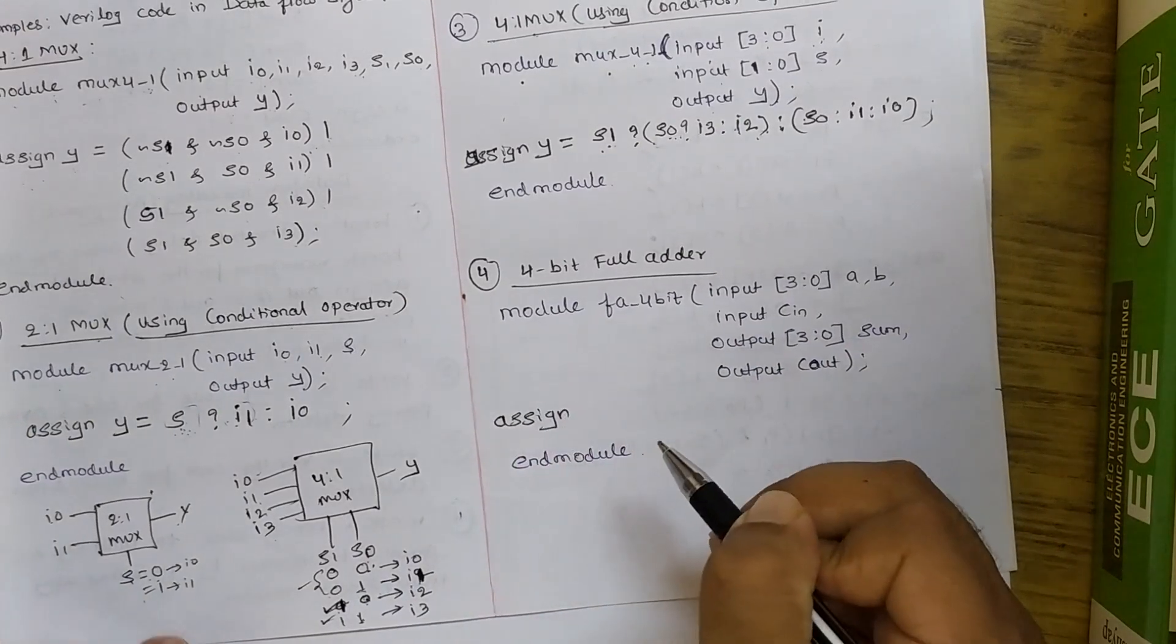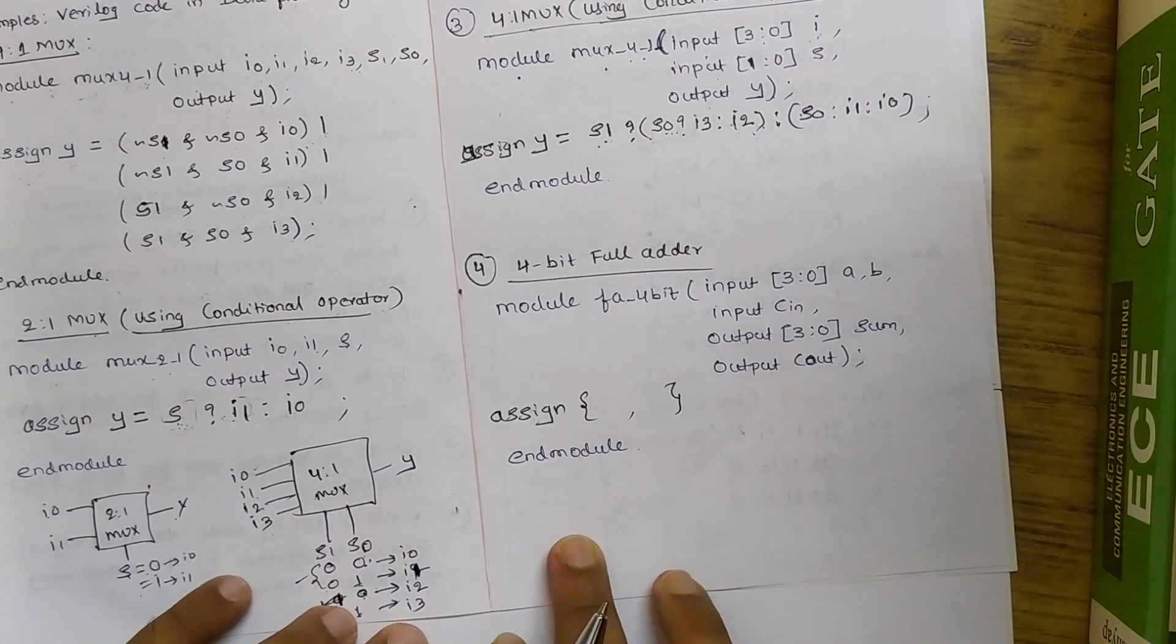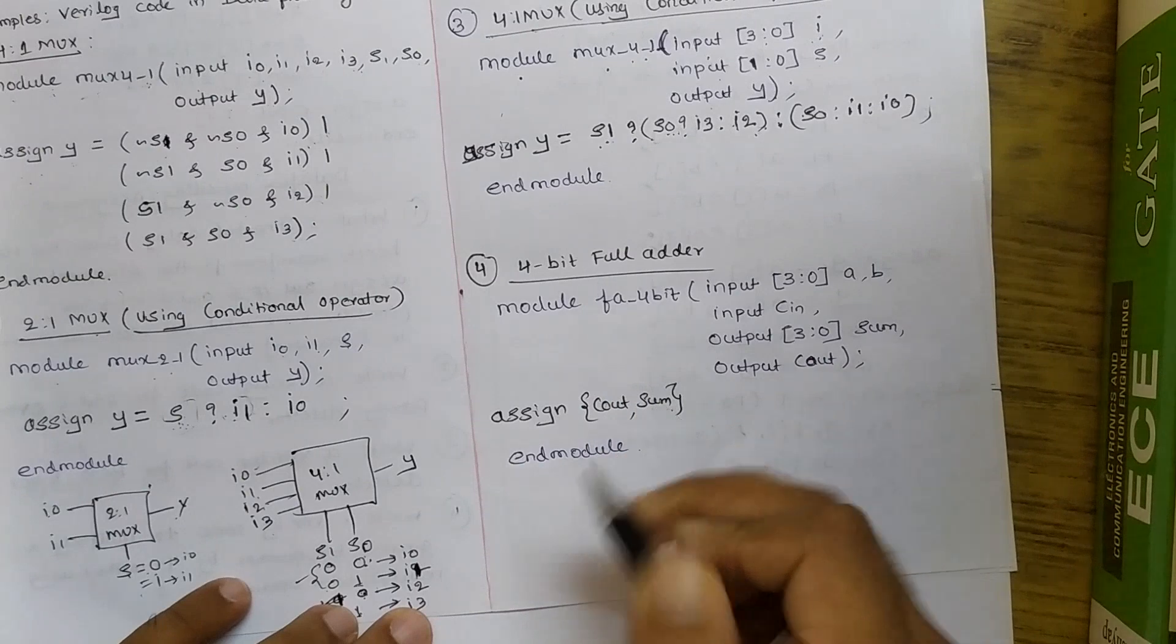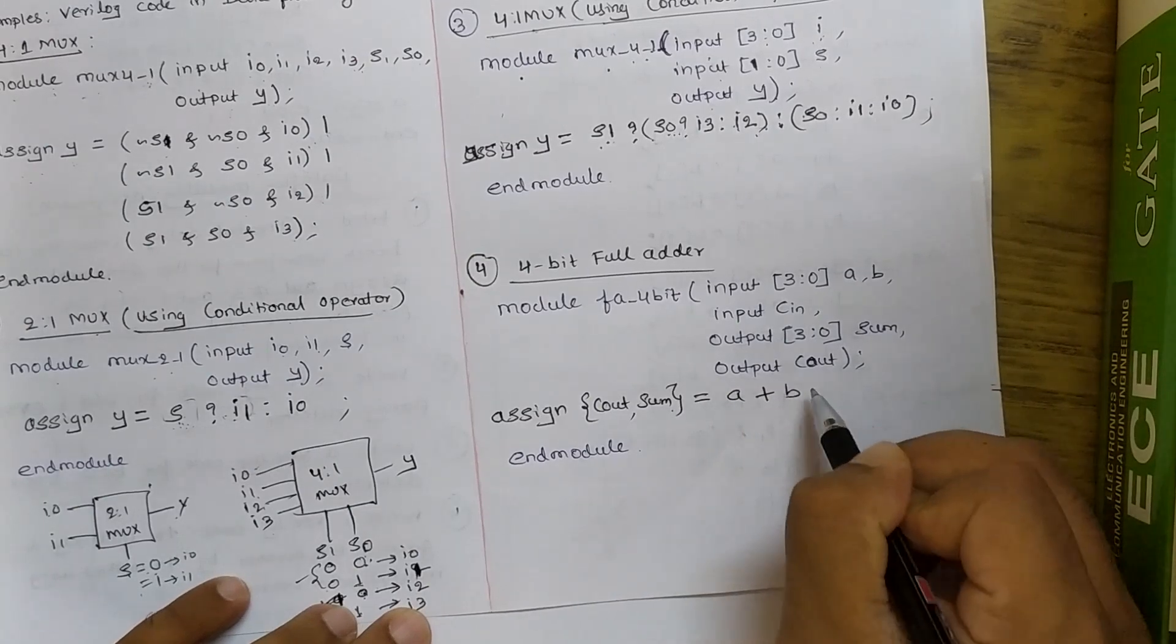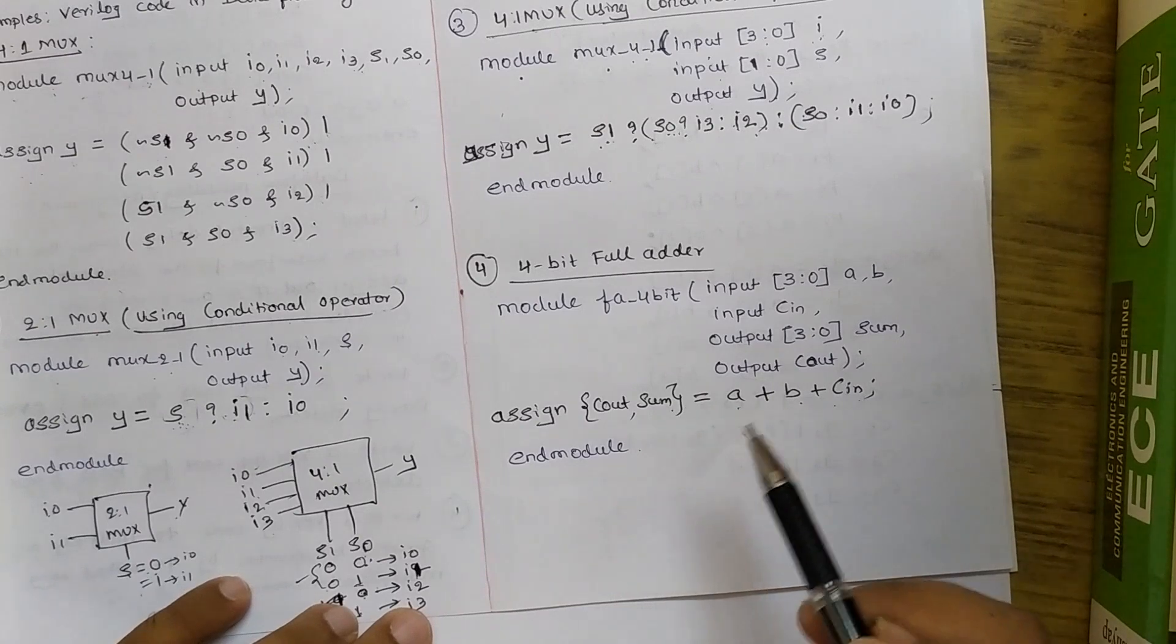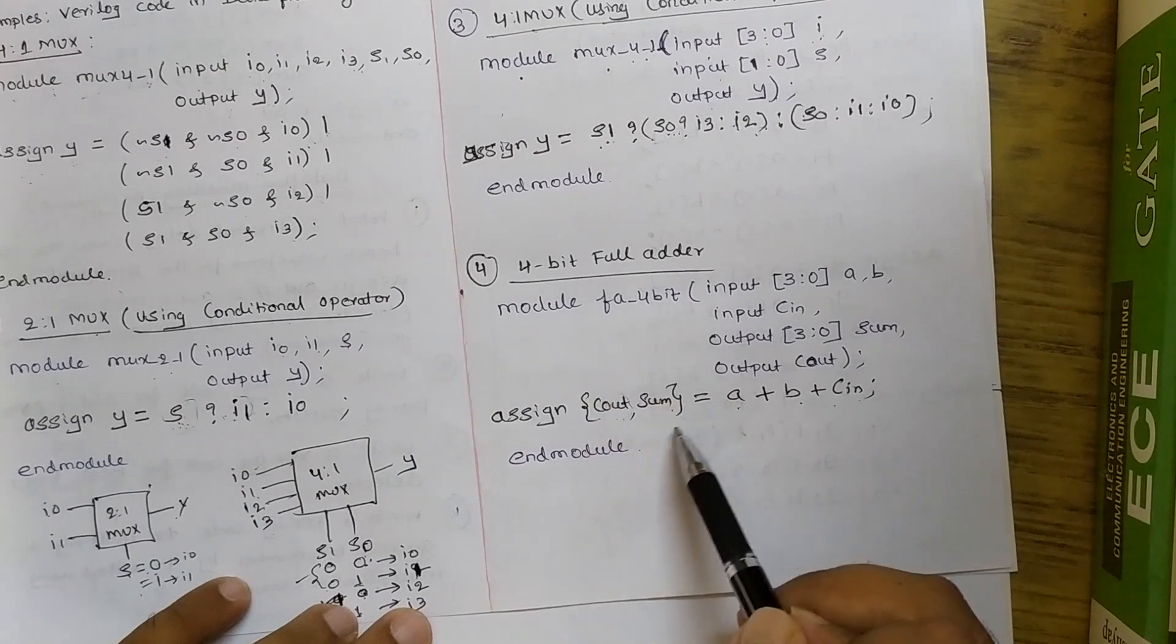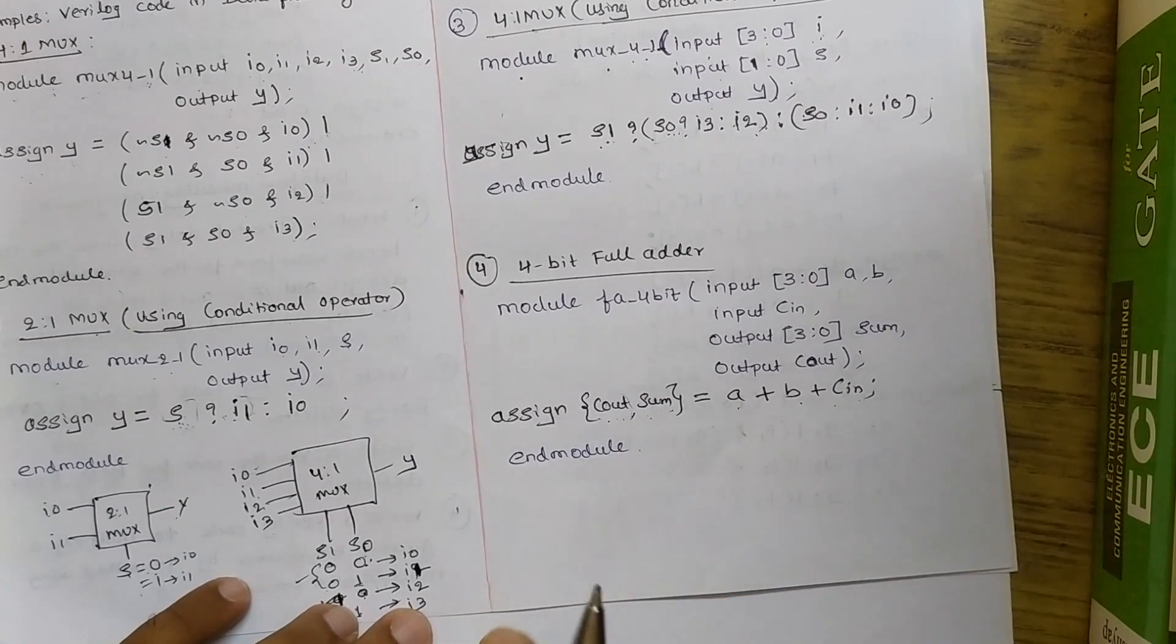Assign. Concatenation operator is flower bracket separated by commas. So here, I'll pick Cout and sum. Sum is of 4 bits. Cout is of single bit. So I'll assign it with the addition of inputs A plus B plus Cin. So what happens here is 4-bit plus 4-bit addition plus one carry may result in 5-bit answer if there is a carry overflow. That carry overflow bit to store it, we need extra bit space that I'm creating using Cout by concatenating with sum. Most significant bit will be Cout. Next comes the most significant bit of the sum. So this is 4-bit full adder.